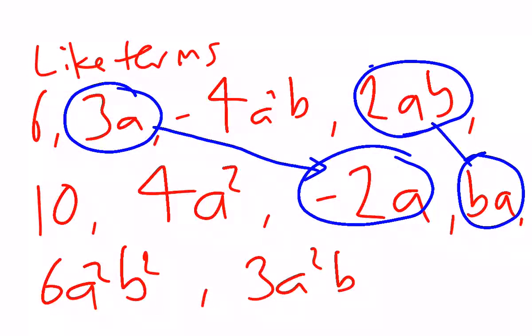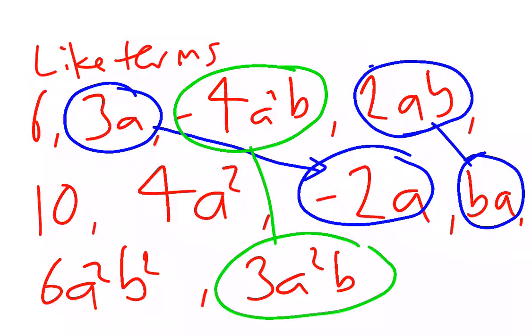Also like terms are negative 4ab and, oh sorry, a squared b and 3a squared b. a and b, a squared b not raised to the power there. One more pair.